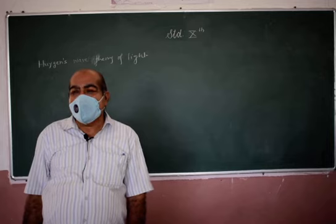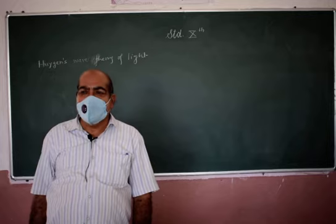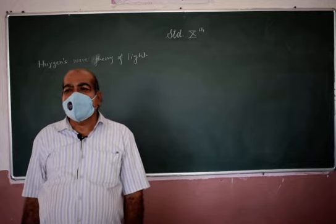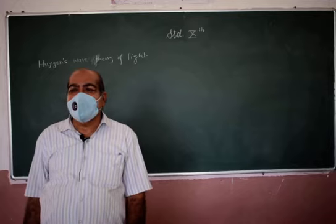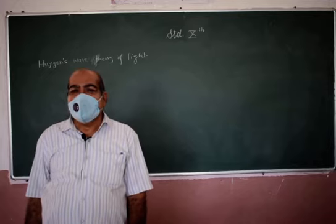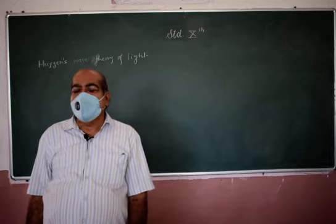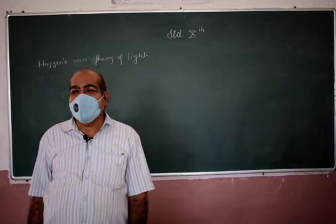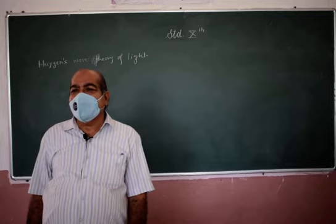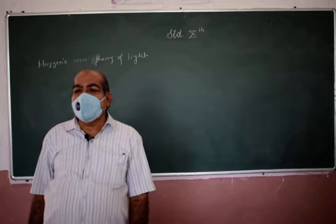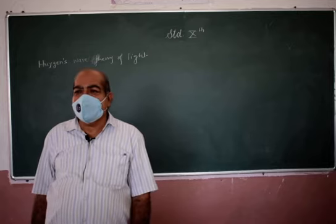The different colors of light are due to the different wavelengths of the waves. For example, the violet color has a wavelength of 4000 angstrom units, the red color has a wavelength of 7000 angstrom units, and the yellow color has a wavelength of 6000 angstrom units. The different colors of light are due to the different wavelengths of waves emitted from the source of light.